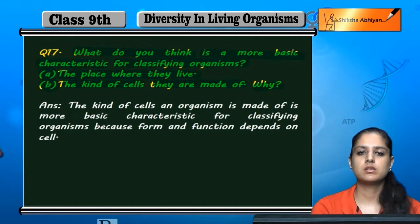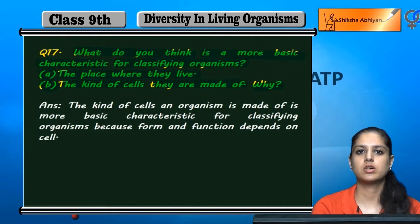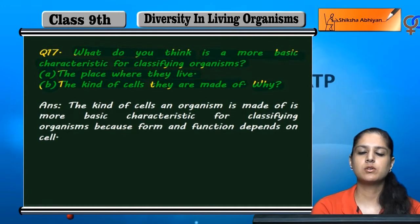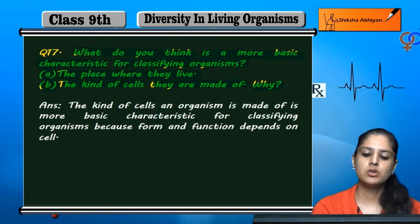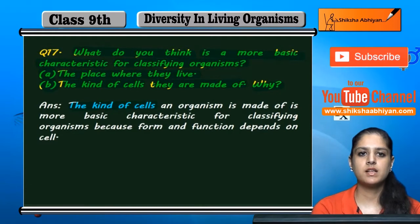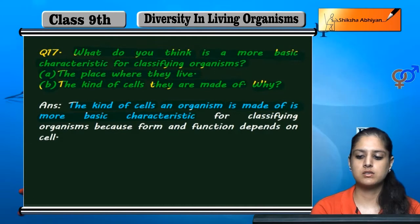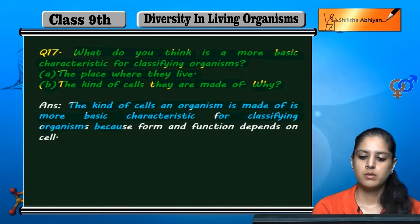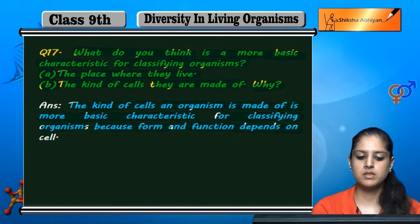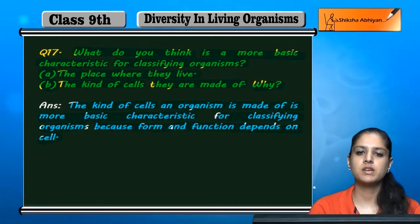If we look at these two, the kind of cells an organism is made of is the more basic characteristic for classifying organisms. Place cannot be used because there are different types of organisms living in one place. Cells can become a basic basis, because form and function depend on cells.